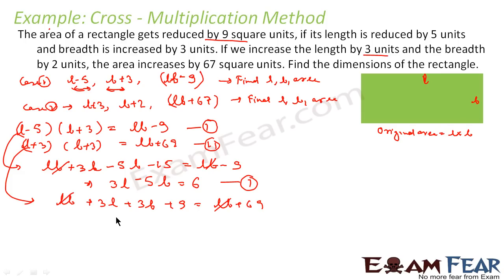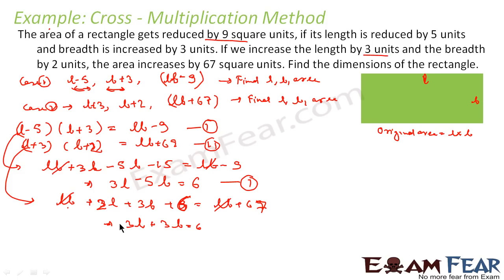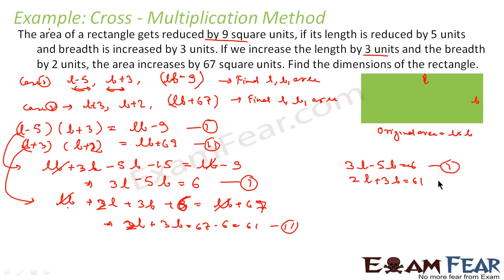After cancelling lb from both sides of equation 2, we get 2l plus 3b plus 6 equals 67, so 2l plus 3b equals 61. So my final two equations are: equation 1 — 3l minus 5b equals 6, and equation 2 — 2l plus 3b equals 61. I have these two equations and I can now solve them.